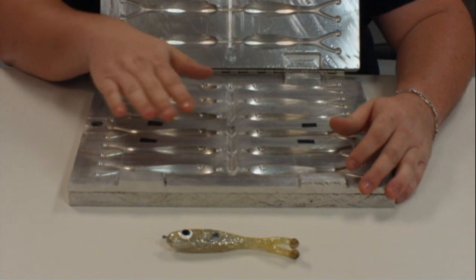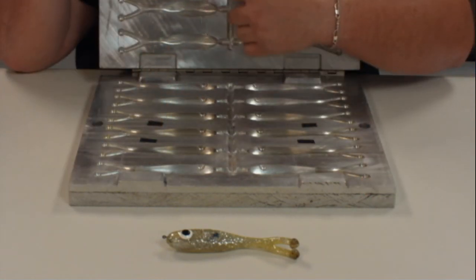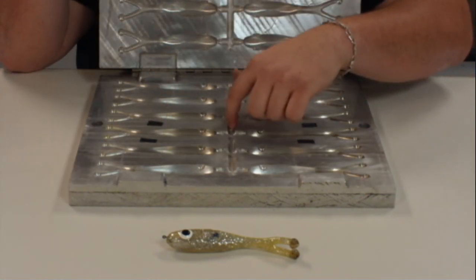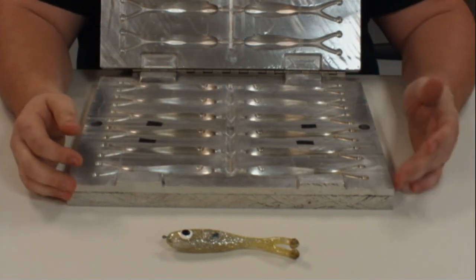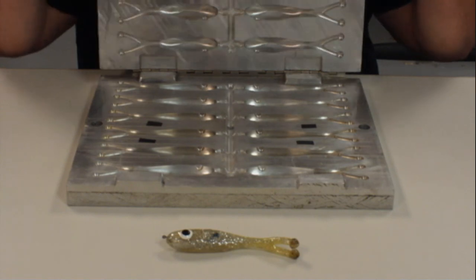Once we're happy with the design we've come up with and have gotten all the feedback we need and incorporated it into the redesign of the lure, we can send that file off and get a complete production-ready mold machined that will be able to spit out as many cavities as we can handle in the machine.